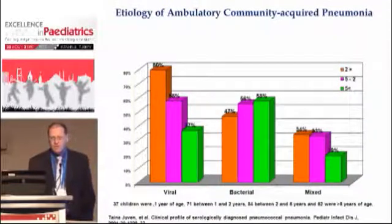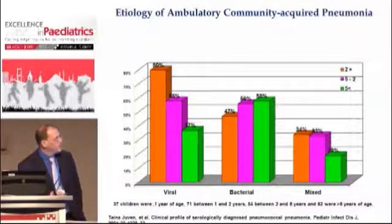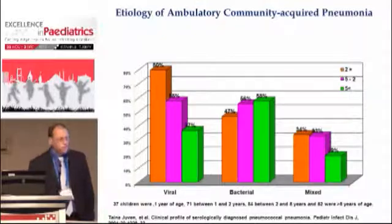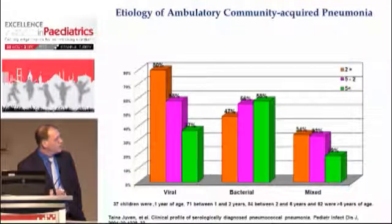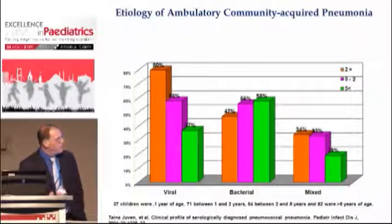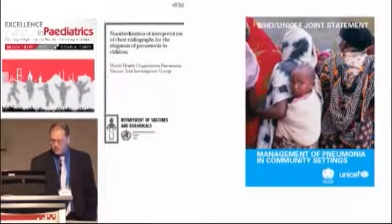Viruses and bacteria etiology are dependent on age. In the orange bars, children less than two years of age; children two to five years of age; and in the green bar, children more than five years of age. The viral etiology is mainly common in the first two years of life and then is reduced by age, while bacterial causes are increasing by age. However, most probably important is the co-infection — in one-third of cases, bacterial and viral etiologies occur together.